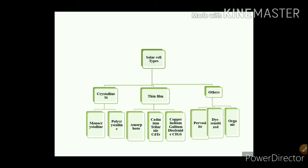After getting these monocrystalline cylindrical ingots, we cut them into wafers. These wafers are again diffused and a p-n junction is formed. Finally, we get monocrystalline solar cells.